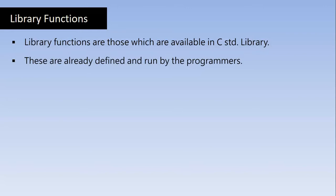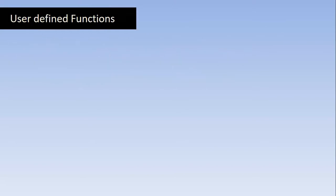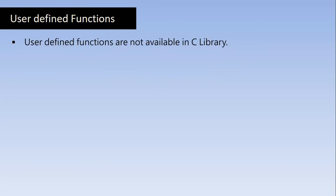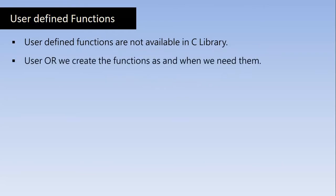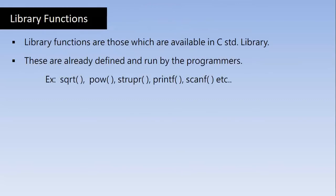Apart from these functions, if we want any other extra tasks to be done, we should write our own functions, which are called user-defined functions. Examples of library functions are square root, power, string upper, printf, scanf, and so on. User-defined functions are not available in the C library — we create them as and when we need them. Let's go and find out how the square root and power functions work.